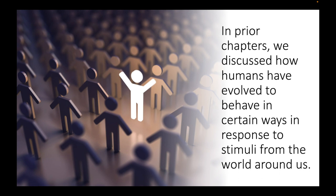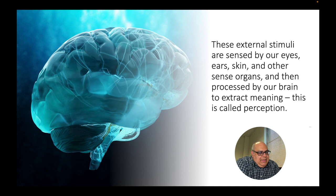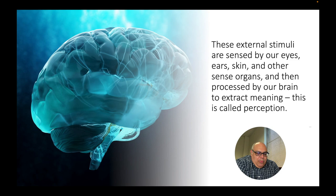In prior chapters of the Levy textbook, we've discussed how humans have evolved to behave in certain ways in response to stimuli from the world around us. The last chapter, chapter 3 of the Levy textbook, talked about how external stimuli are sensed by our various sensory systems, including our eyes, ears, skin, and other sense organs. That was the concept of sensation. And then our brain puts together all this information from our eyes, ears, nose, etc., in a process called perception. And that's how we're able to start to develop an understanding of what's happening in the world around us.